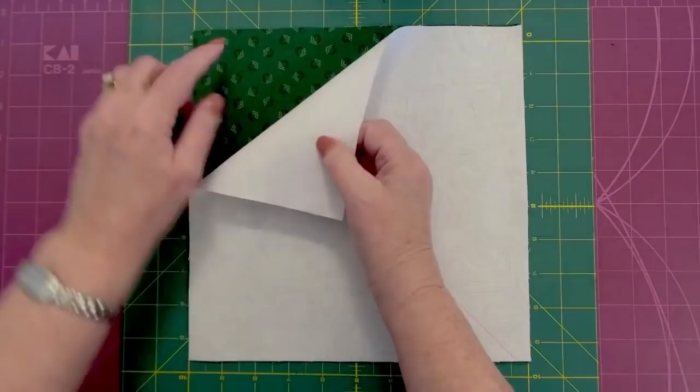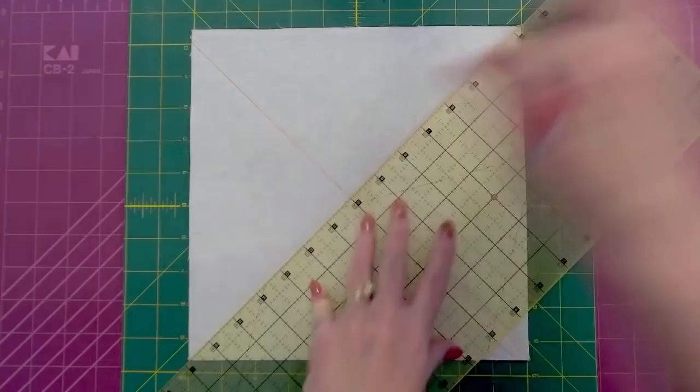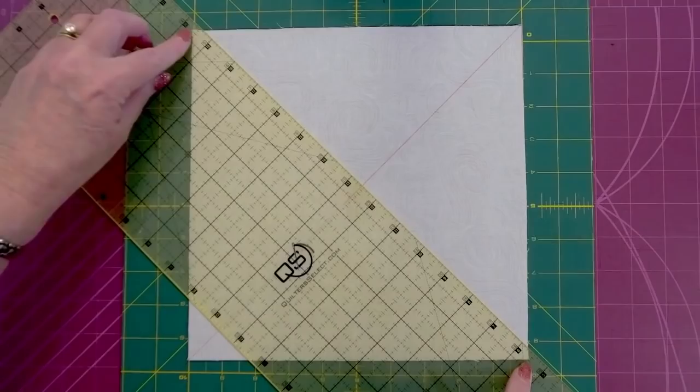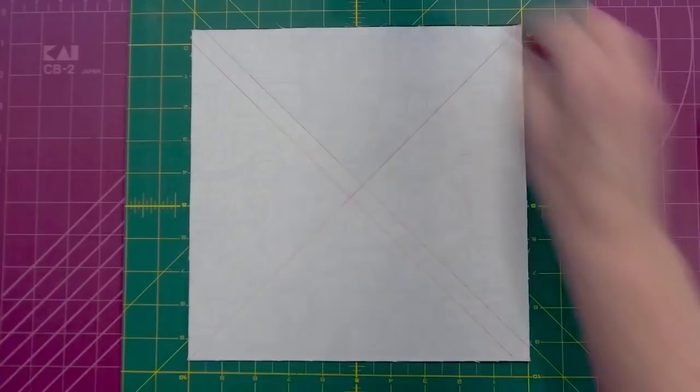Now, we start off with two layer cakes, one dark, one light. Put them right sides together, and now we're going to mark them. You can either start off by marking a line directly down the diagonal, in which case you would sew a quarter inch from that line. Or what I often like to do is I will draw two lines. See that mark is the corners, and I've got two lines, each of them a quarter inch from the center, and then I can sew on those lines.